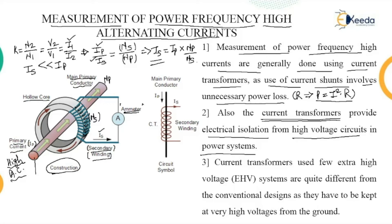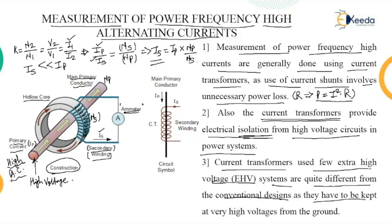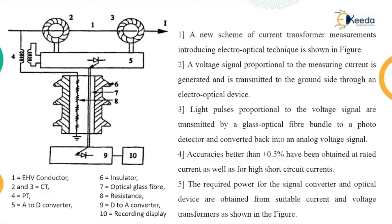That conductor is called a high voltage circuit. Since this CT is hollow and there is no connection between this core and the current-carrying conductor, we get electrical isolation. This method can be used even for EHV systems, that is extra high voltage systems, which are quite different from conventional designs as they have to be kept at very high voltages from the ground. This method of measurement of high AC current under power frequency of 50 Hertz is also modified.